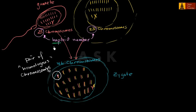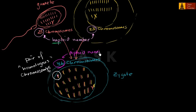Haploid refers to when you have half the full contingency of chromosomes. For human beings, the haploid number is 23. Haploid is based on the prefix 'hapl,' meaning single — so you have a single member of each pair. Diploid means you have both chromosomes in each pair, the full contingency. The 46 chromosomes is called the diploid number for humans. When discussing a species, biologists refer to the haploid number as n chromosomes and the diploid number as 2n chromosomes.